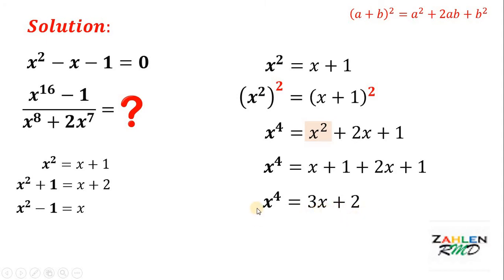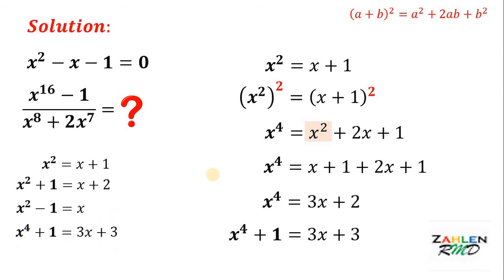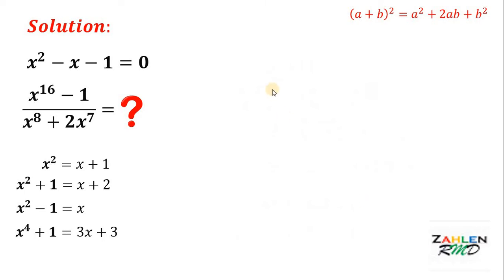Memorize this result because it will help us later on. From x to the fourth power equals 3x plus 2, we add 1 to both sides and get x to the fourth power plus 1 equals 3x plus 3. Now, starting again from x to the fourth equals 3x plus 2, we square both sides.